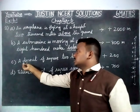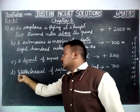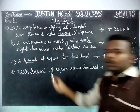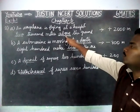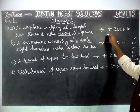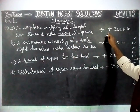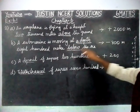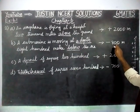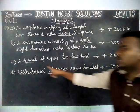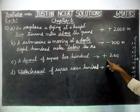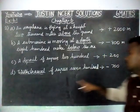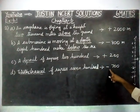The important points to remember: 'above' means plus 2000, 'below' means minus 800, 'deposit' means plus 200, and 'withdrawal' means minus 700.